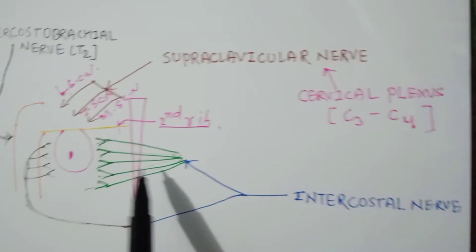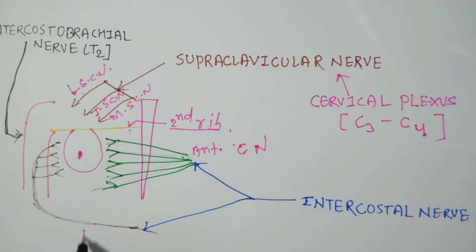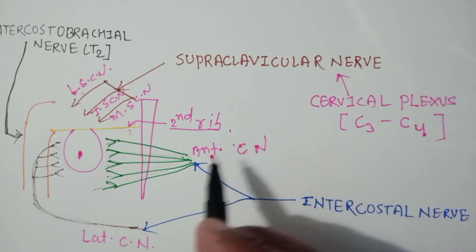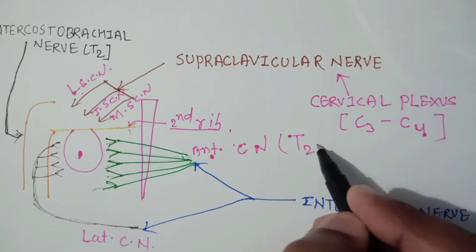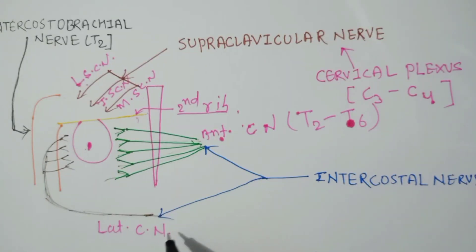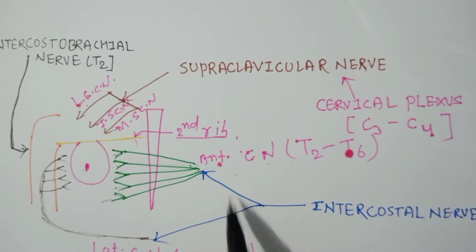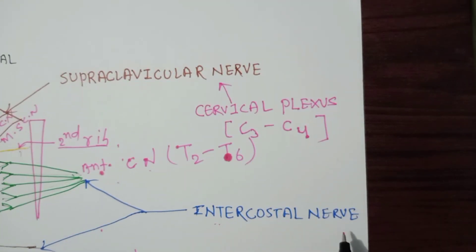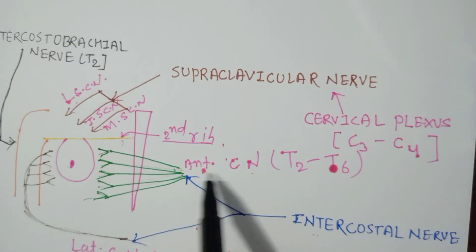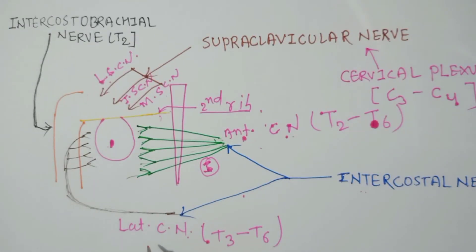From below the second rib, the breast region is supplied by two nerves: the anterior cutaneous nerve and the lateral cutaneous nerve. The anterior cutaneous nerve arises from T2 to T6, and the lateral cutaneous nerve arises from T3 to T6. Both arise from the intercostal nerves. The anterior cutaneous nerves are 5 in number and the lateral cutaneous nerves are 4 in number.